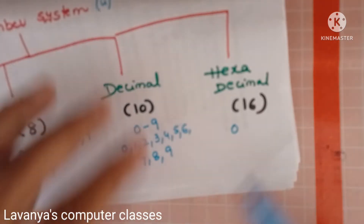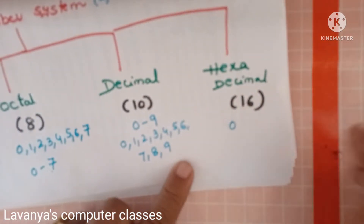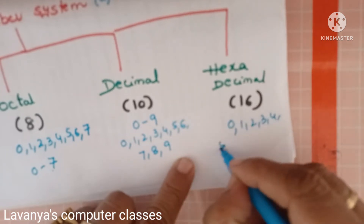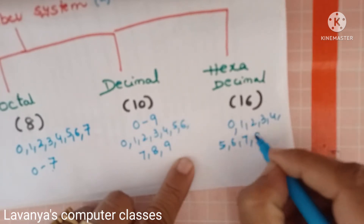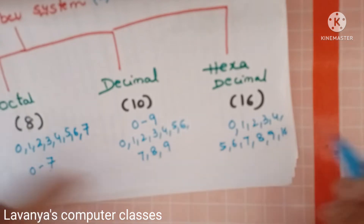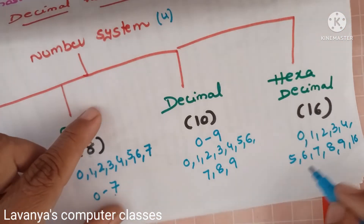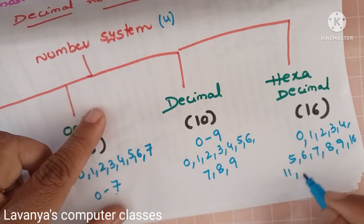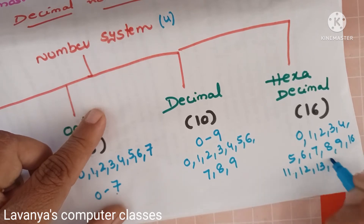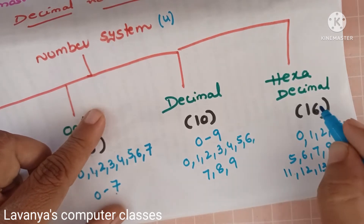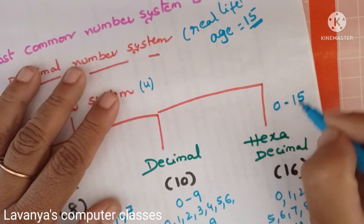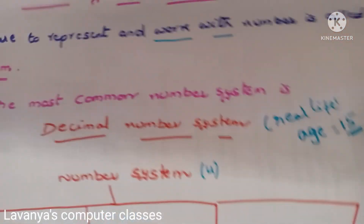Hexadecimal means 10 plus 6, which is 16. Its base is 16, and its range of values is 0 to 15 — totally 16 values. That is known as the hexadecimal number system.